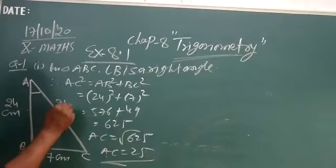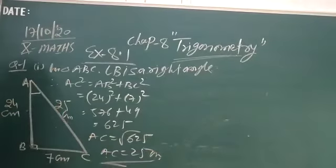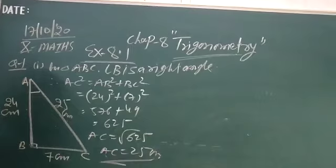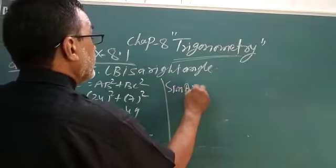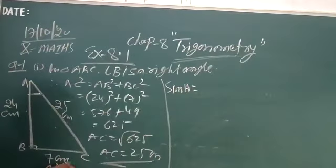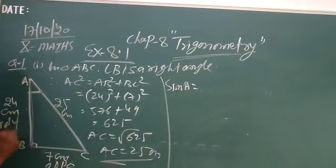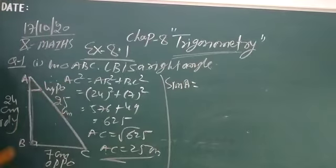So this is 25 centimeters. And then you can find all the 6 trigonometric ratios. For example, suppose sine A. So sine A is the angle. This side is known as opposite side. This is known as adjacent. And this is hypotenuse, correct?